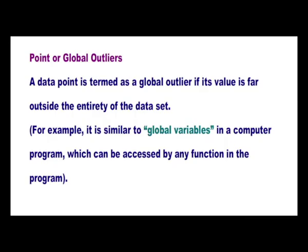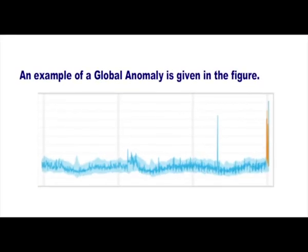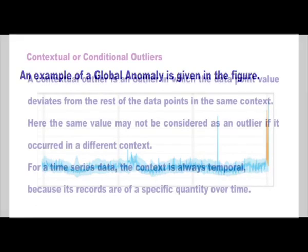Now we will discuss about them in detail. Point or global outliers: a data point is termed as a global outlier if its value is far outside the entirety of the data set. For example, it is similar to global variables in a computer program which can be accessed by any function in the program. An example of a global anomaly is given in the figure.